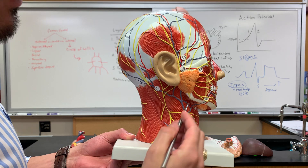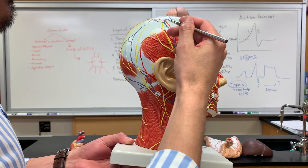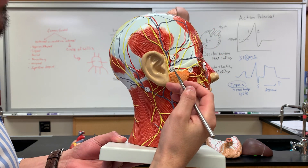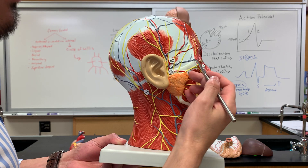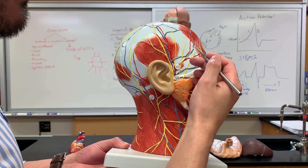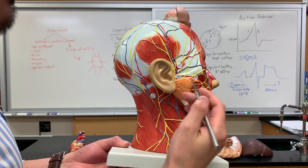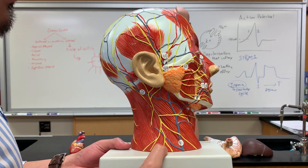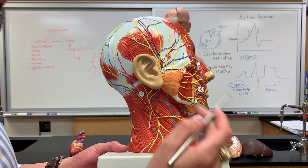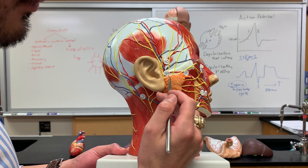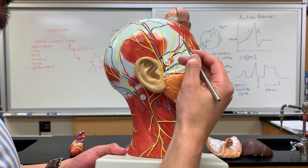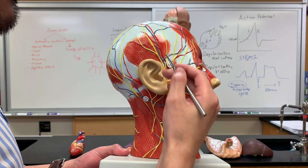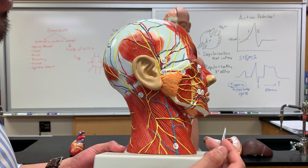You have the external jugular vein here, and then this one — I have it as number 59 — coming from here, coming this way; all of that is the superficial temporal vein. And then the part here in red is the superficial temporal artery, which is number 60.